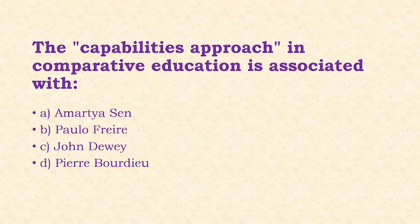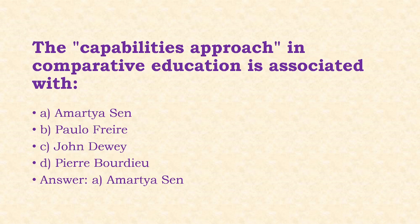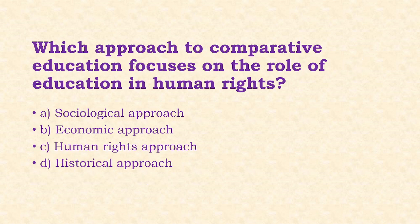Next: The capabilities approach in comparative education is associated with which scholar? Options: Amartya Sen, Paul Freire, John Dewey, Pierre Bourdieu. The answer is option A, that is Amartya Sen.